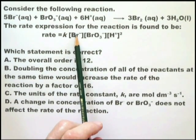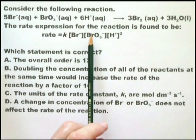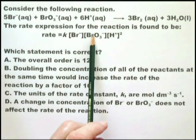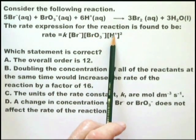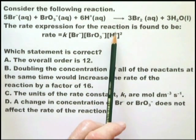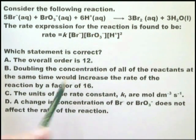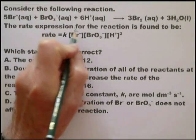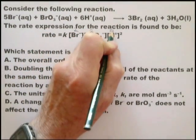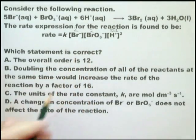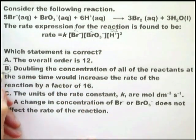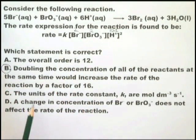Doubling the concentration of all the reactants at the same time would increase the rate of the reaction by a factor of 16. Okay, so if you double that, that's 2. Double that, so that means 2 by 2 is 4. And then double that, that's 2 by 2. That's another 4. So 4 times 2 times 2. So the double, 2, 2, and 2 times 2. So yes, that is 16. That is clearly correct.